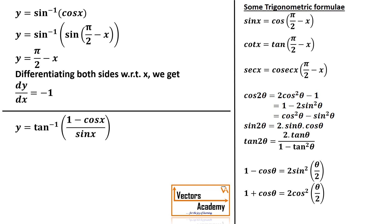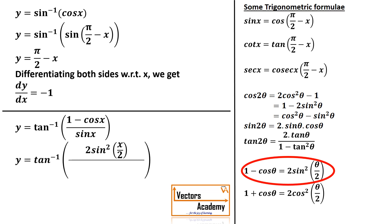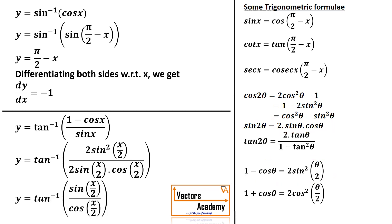Let's look at another example: tan inverse of (1 minus cos x) upon sin x. The formula for 1 minus cos x is 2 sin²(x/2), and the formula for sin 2θ is 2 sin θ cos θ, where the angle becomes half. Applying the formula in the denominator, sin x becomes 2 sin(x/2) cos(x/2). In numerator and denominator, 2 gets cancelled and one of the sine terms gets cancelled.